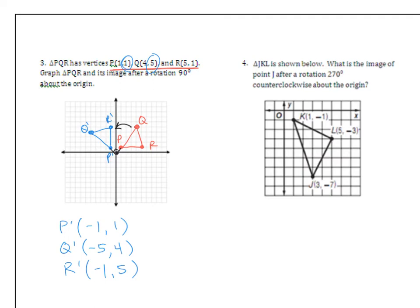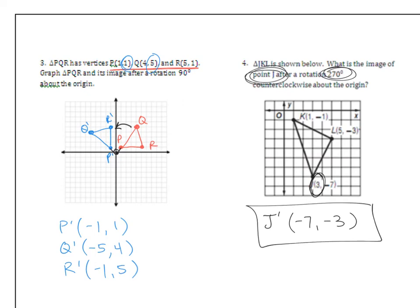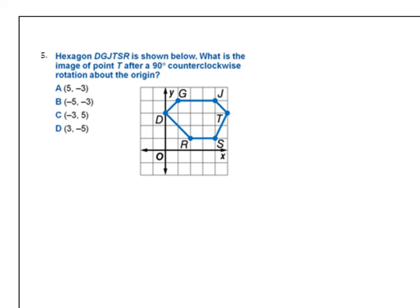Number 4: Triangle JKL is shown. What is the image of point J after a 270-degree rotation about the origin? The rule for 270 is: multiply the x-coordinate by negative 1 and then interchange. You should get (negative 7, negative 3). Number 5: Point T is at (5, 3). For a 90-degree rotation, multiply the y-coordinate by negative 1 and move it to the front. Your answer should be C.